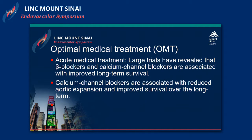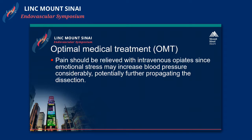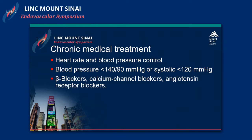For optimal management of patients who are not acute, IRAD data and large trials revealed that calcium channel blockers along with beta blockers are associated with improved long-term outcomes. Calcium channel blockers also reduce aortic expansion over the long term, and pain should be relieved with intravenous opiates. For chronic medical therapy, heart rate and blood pressure must be controlled — ideally below 140/90, with systolic usually below 120. Beta blockers are a must, and calcium channel blockers have been shown to help.